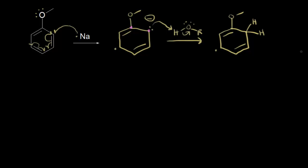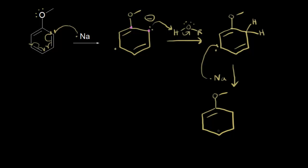The third step is another electron, which we get from sodium. Sodium comes along and donates a valence electron to this carbon, giving it a negative one formal charge — this is our anion. The next step is protonation, and this time protonation is occurring meta to our electron donating group. These electrons pick up a proton from the alcohol, and now we can show the product.